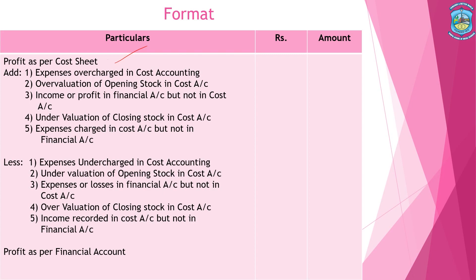The first item to add: expenses overcharged in cost accounting. If expenses are overcharged in cost accounting, we will add this to the profit. The second item: overvaluation of opening stock in cost accounting — this will also be added to the profit. These are items which will be added.